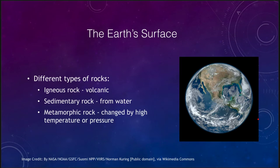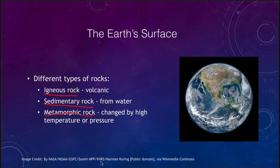The surface of the Earth has a number of different types of rocks, with three primary classifications. There are igneous rocks, which are volcanic — formed from molten lava that has solidified. We find sedimentary rocks, which are formed from water dissolving various rocks and recombining them. And we can find metamorphic rocks, which are changed — an igneous or sedimentary rock transformed by high temperatures or pressures.